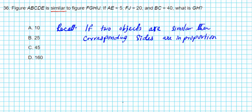So what we're going to do in this problem: let's call the first figure ABCDE figure one, and FGHIJ figure two. We're going to be setting up statements of proportionality — basically saying that ratios of corresponding sides are equal. Figure one will be our numerator and figure two will be our denominator.